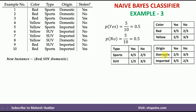Similarly, we calculate the conditional probabilities for the other two attributes — type and origin. Type has two possible values: sports and SUV. We count how many times sports and SUV appear in yes and no examples respectively. Finally, origin has two possible values: domestic and imported, and their probabilities are computed in the same way.